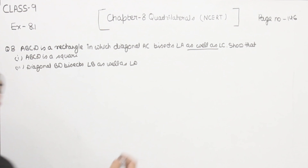Now I am going to give the names to the angles. This is angle number 1, this is angle number 2. Coming on the other side, this is angle number 3 and this one is angle number 4. Now we are going to solve the question.